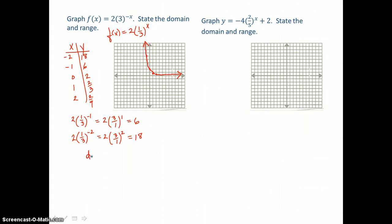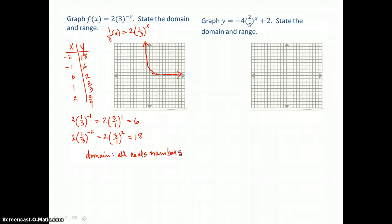The domain for this function is, again, all reals. All real numbers, because that exponent can be anything. It can be negative. It can be zero. It can be positive. Any real number. The range, however, since it approaches that x-axis, that's its asymptote, is going to be y greater than zero.